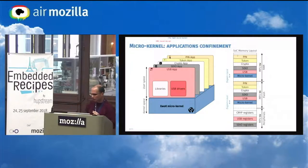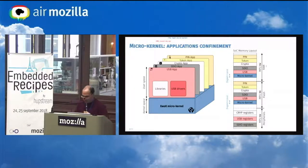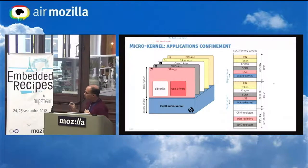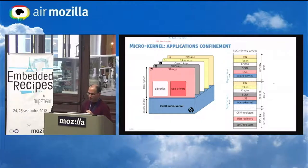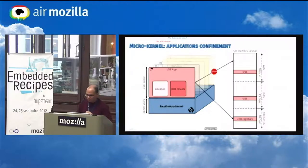Looking at how we implemented isolation, all applications can be split into three main parts: the RAM where read-write data is stored, the flash where the code is placed for execution, and the peripherals — devices memory-mapped inside the SoC layout. Only the kernel executes in supervisor mode; all other applications execute in user mode.